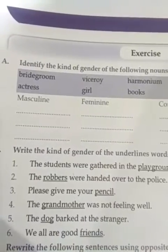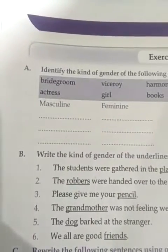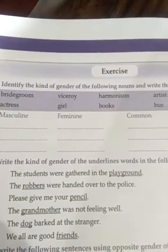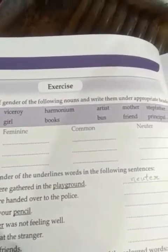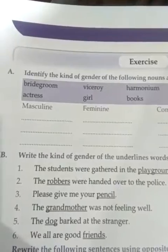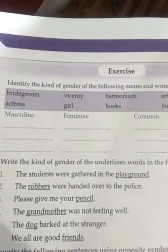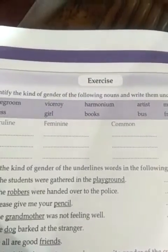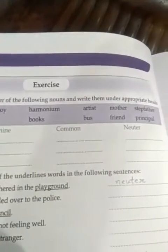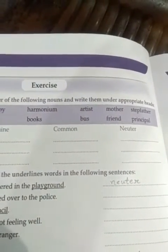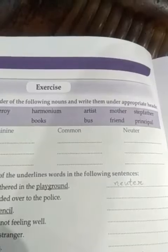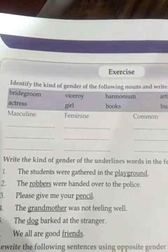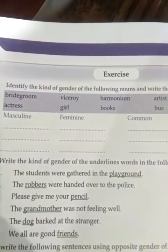Now this is from page 28, part B: write the kind of gender of the underlined words in the following sentences. The first sentence is 'The students were gathered in the playground' — 'playground' has been underlined. You have to write the kind of gender. I have written neuter — the playground is a neuter gender.